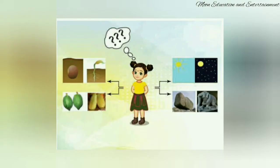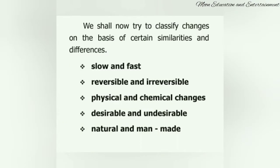How can we classify the changes? There are a lot of changes that occur in nature. Some take a little time, some take more time, some create a new substance, some change position, some changes are done by human beings, and some are done by nature. We can classify changes into many categories: slow and fast change, reversible and irreversible change, physical and chemical changes, desirable and undesirable change, and natural and man-made changes.